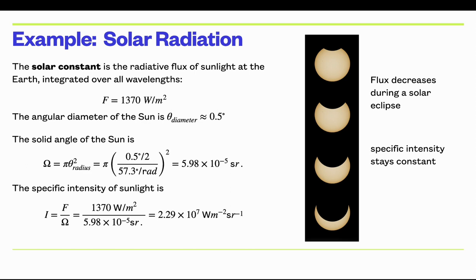This is why you're not supposed to look at the sun during a partial eclipse. If you stared at the sun normally, you would burn a circular hole in the back of your retina. During a partial eclipse, you'd just burn a differently shaped hole. The bottom line is this illustrates the difference between the flux of light we get from the sun and the specific intensity of the sun's light.